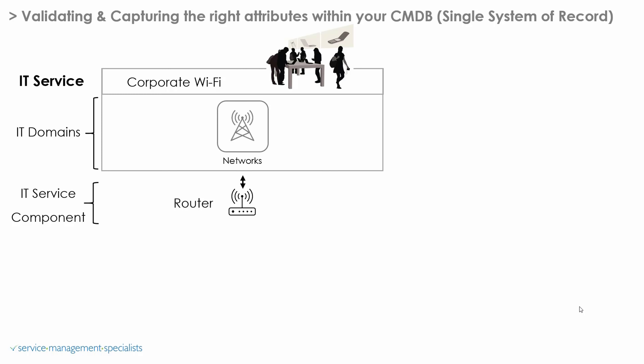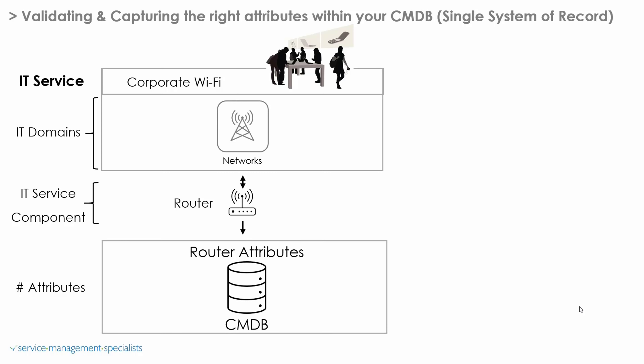What we want to be able to do is capture the right information about that router so it's more meaningful for us to manage it appropriately. When we stood up our CMDB or took our single system of record out of the box, there were a number of attributes we could leverage for a specific router — actually 10 attributes. But in this case we've outsourced the router management to a service provider, so we want a couple of additional attributes. It's really important that we understand whether those attributes within our CMDB are relevant and fit for purpose for our organisation.